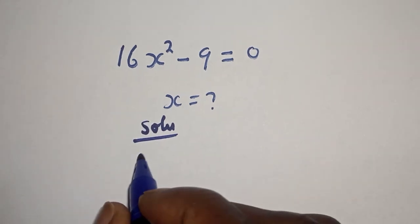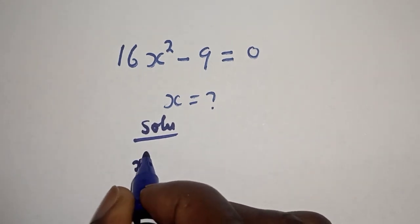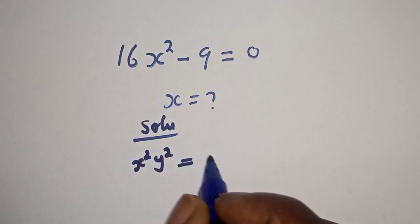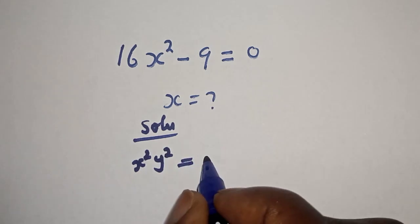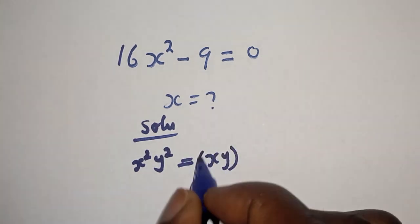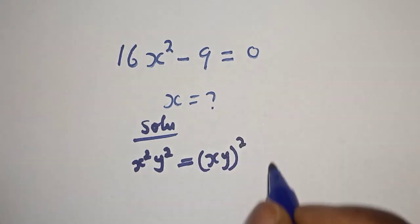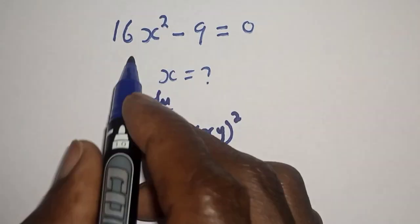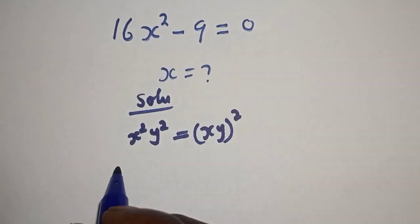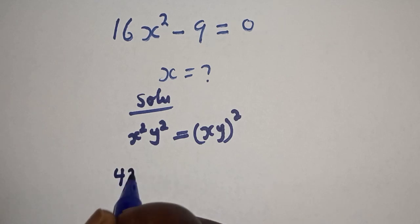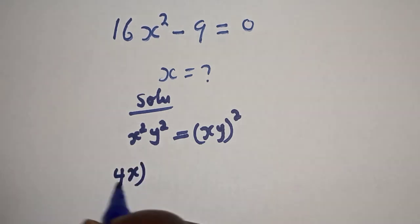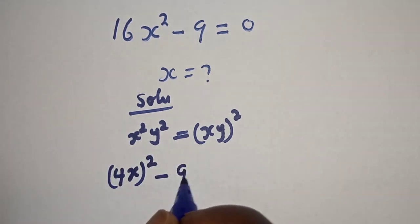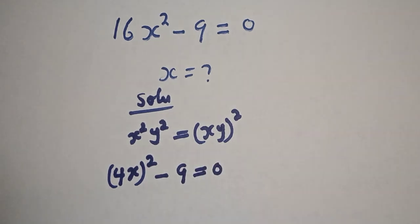Take note that 16s² can be rewritten as (4s)². So the equation 16s² - 9 = 0 can be written as (4s)² - 9 = 0.